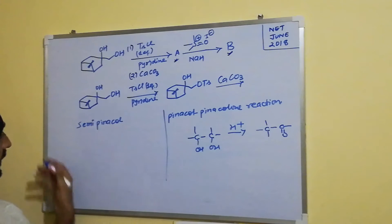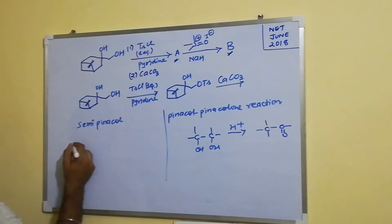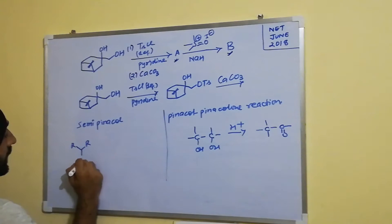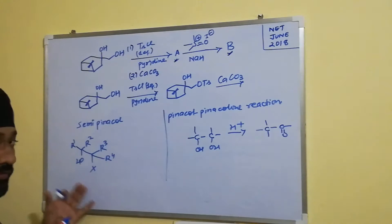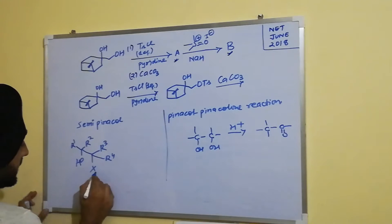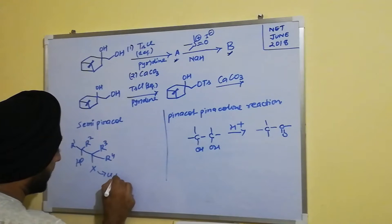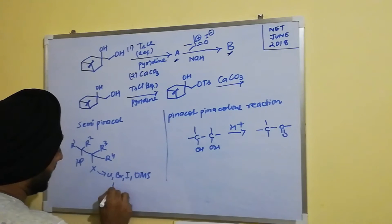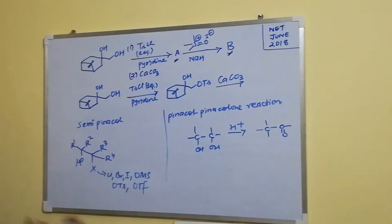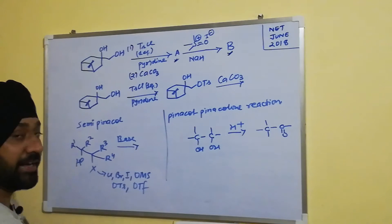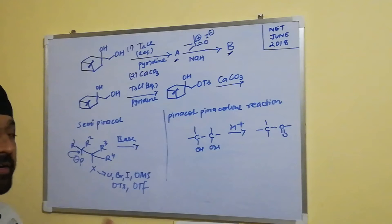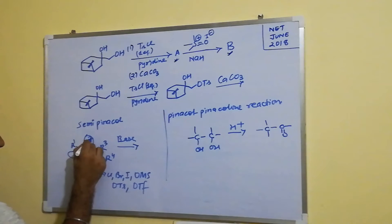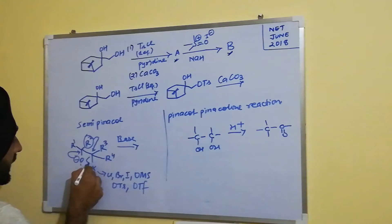In the semi-pinacol reaction, one type involves an alcohol with substituents R1, R2, R3, R4, and instead of a diol we have a hydroxy group next to a leaving group X — which can be chloro, bromo, iodo, mesylate, tosylate, or triflate. When treated with a base, the base abstracts the hydrogen, forming a negative charge, and then the alkyl group with higher migratory aptitude migrates onto the adjacent carbon.